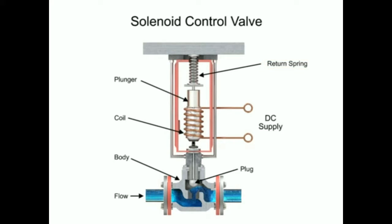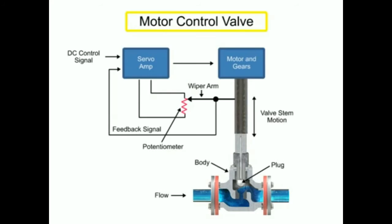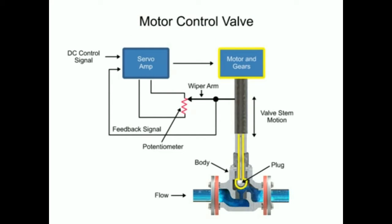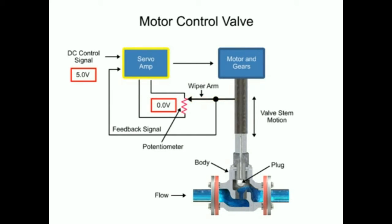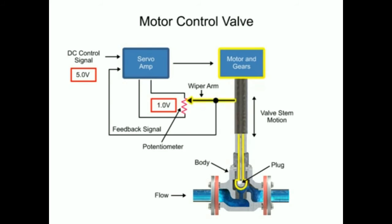Another method for variable valve positioning uses a motor and is referred to as proportional control mode. Using a gear motor attached to the valve stem, a servo amplifier provides a DC control signal that moves the valve to the desired position. Feedback is achieved with a wiper arm attached to the valve stem that sends a signal back to the servo amplifier where the position is monitored. The servo amplifier drives the motor until the control signal is equal to the feedback signal.